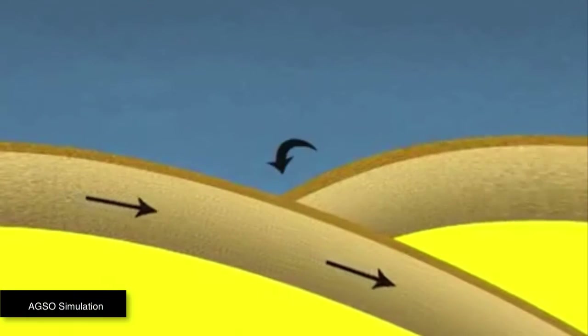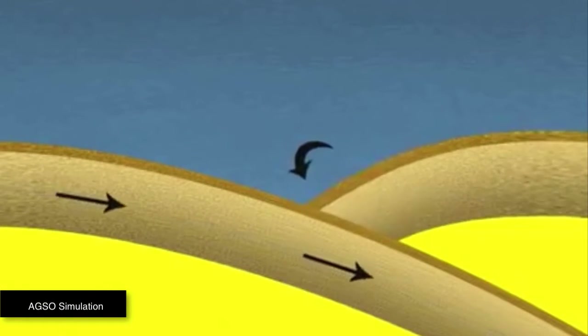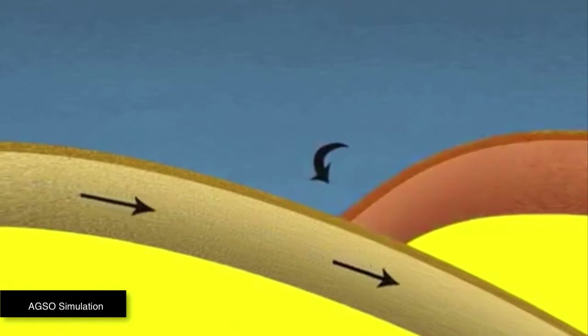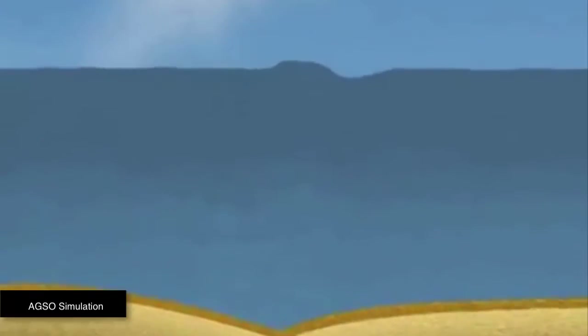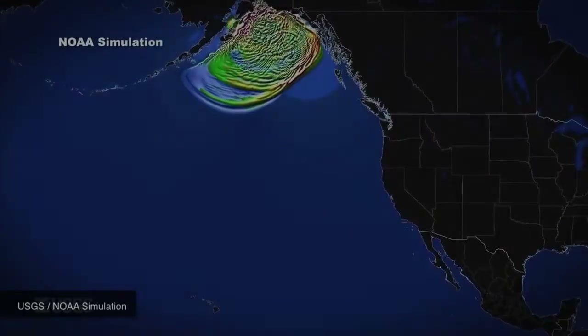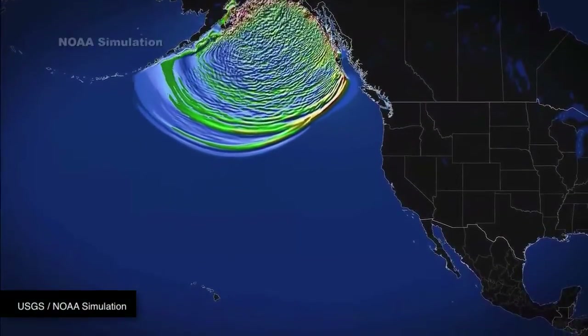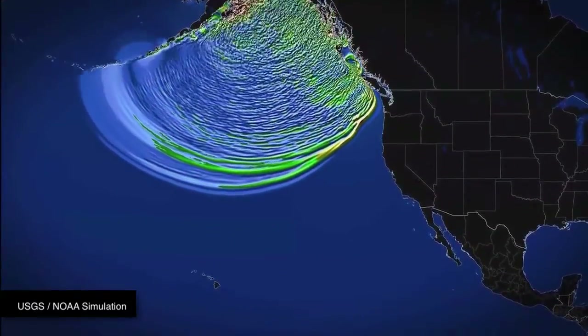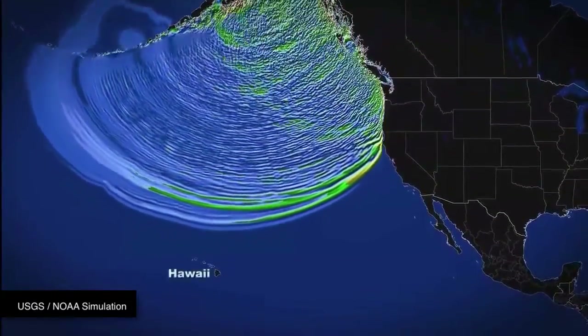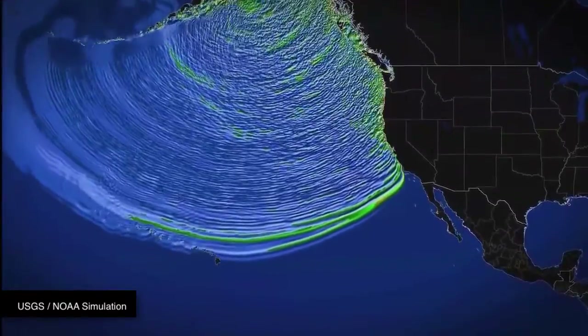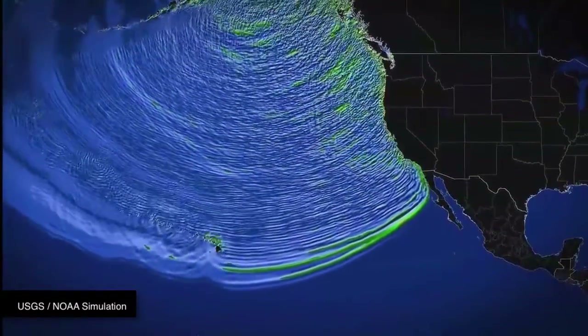In the case of earthquakes, where one tectonic plate overrides another, the vertical motion of the seafloor forces the water upward, creating a wave that will move out in all directions. For places like the Aleutian Islands in Alaska, it would take about 12 hours for the wave to travel to Hawaii, where tsunami go at about 500 miles an hour, with wavelengths on the order of 100 miles, and heights of only one meter in the open ocean.